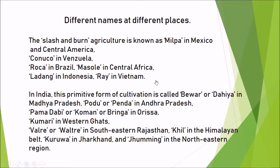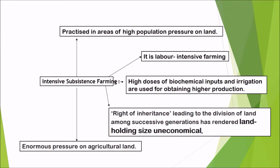Slash and burn agriculture is known by different names around the world: Milpa in Mexico, Conuco in Venezuela, Roca in Brazil, Masol in Central Africa, Ladang in Indonesia, Ray in Vietnam. In India it is called Bewar or Dahiya in Madhya Pradesh, Podu or Penda in Andhra Pradesh, Pama Dhabhi or Kaman Bringa in Orissa, Kumari in West Bengal, Kumari in the Western Ghats region, Valre in Southeastern Rajasthan, Kil in the Himalayan belt, Kuruwa in Jharkhand, and Jhum in the Northeastern region.